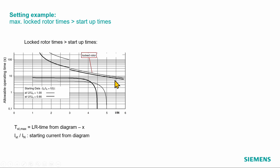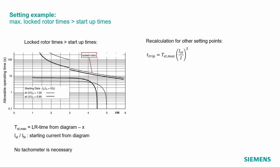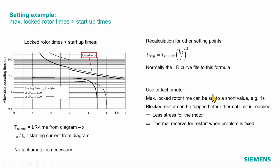By taking a setting slightly smaller than the locked rotor time, the motor starting will definitely not reach too high a temperature. If we insert other startup currents into the formula, the calculated tripping curve fits relatively well with the characteristic from the motor manufacturer — just as an additional verification.